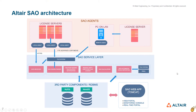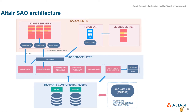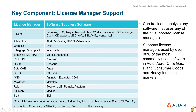SAO is built using a standard three-tier architecture. Data collection, parsing, and database updates run 24-7. Apache Tomcat hosts various SAO portals. Data collection agents can be installed on license servers or remotely. SAO supports 33 different license management systems today. New license manager support is added by customer requests.